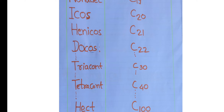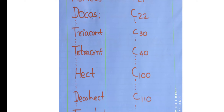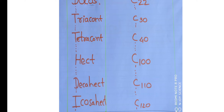C30 is tricon, C31 hentricon, C32 dotricon. C40: C41 is hentetracon, C42 dotetracon. C50 pentacont, C60 hexacont. C100 is hect, C110 dekahect, C120 icoshect.